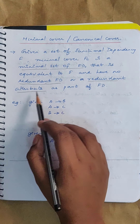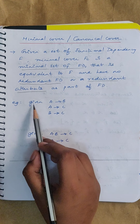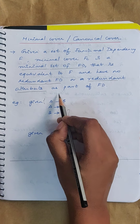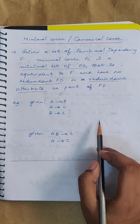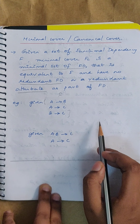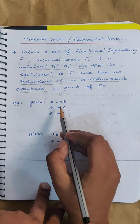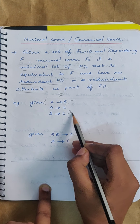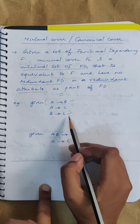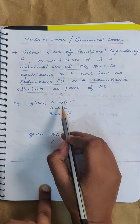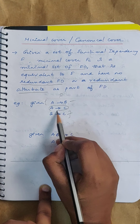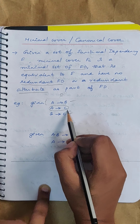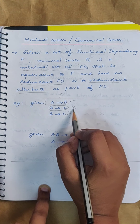What is meant by redundant FD and redundant attributes? Look at this example. Suppose this is your set of functional dependencies, your F. If you want to find out if there is any redundant functional dependency, you can see that A determines B and B determines C. Using the transitivity inference rule, you can write A determines C. Since A determines B and B determines C, A will determine C — so this A→C is a redundant functional dependency.